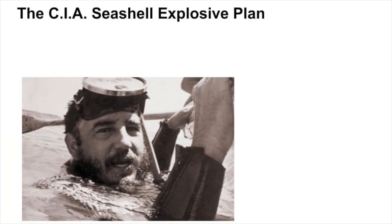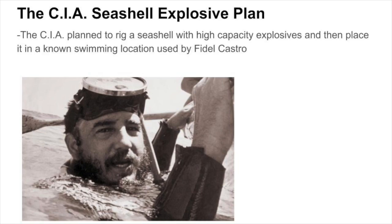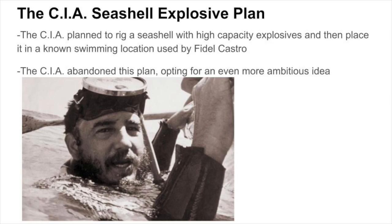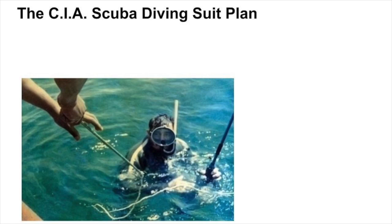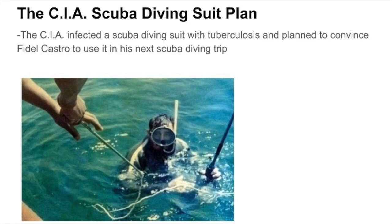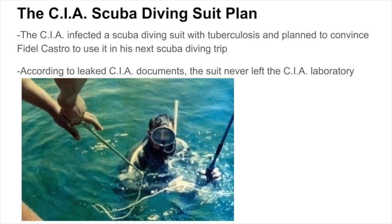After these repeated failures, the CIA chose to adopt an even crazier plan. Their next idea was to rig a seashell with high-capacity explosives and then place it in a known swimming location used by Castro. The CIA later abandoned this plan, opting for an even more ambitious idea. The CIA's next attempt had a similar oceanic theme: they infected a scuba diving suit with tuberculosis and planned to convince Castro to use it in his next scuba diving trip. However, according to the leaked CIA documents, this suit never left the CIA's laboratory.